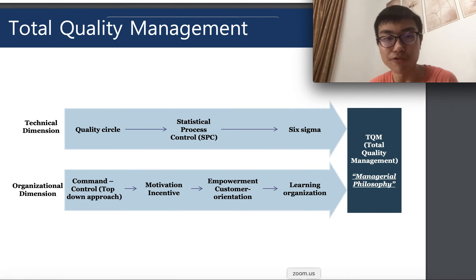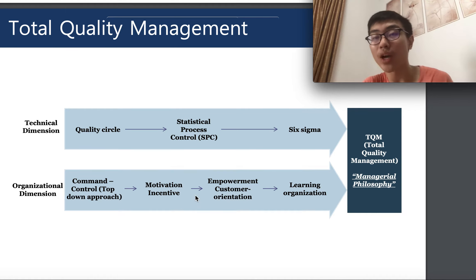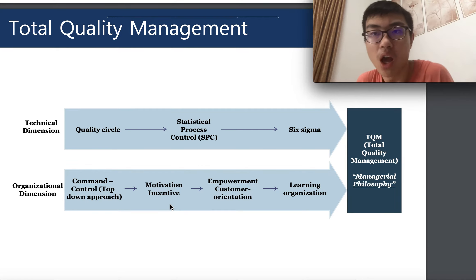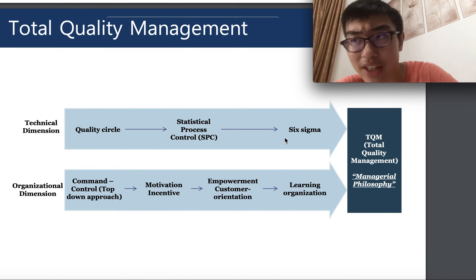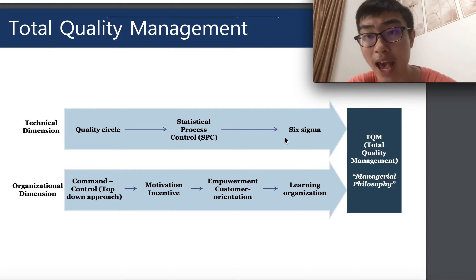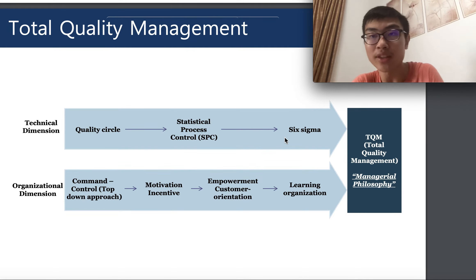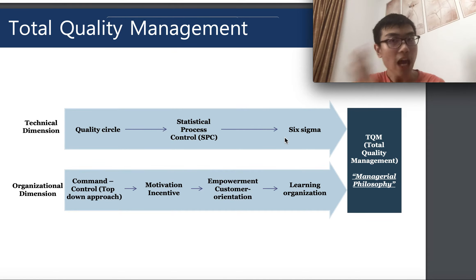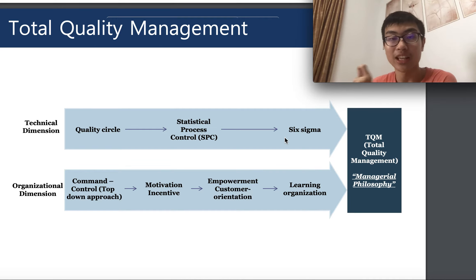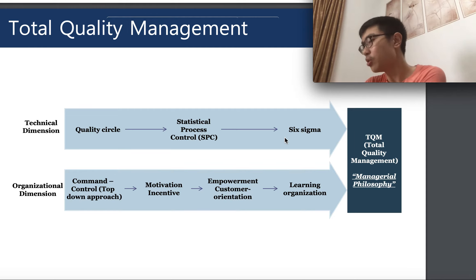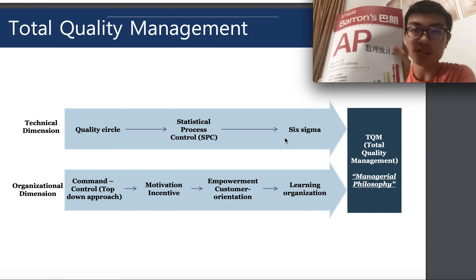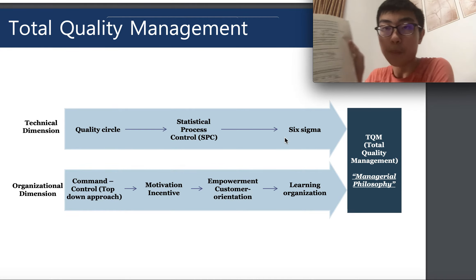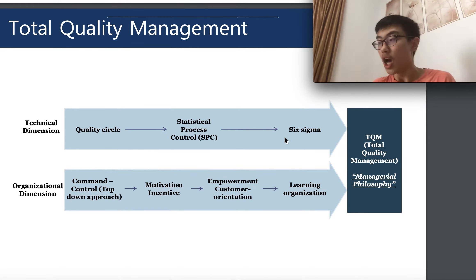As participants in this course, I hope you focus more on the organizational dimension, as it is more directly linked to our managerial and strategic supply chain management course. The quality circle, SPC, and Six Sigma are more for the IT department or those aiming for technical roles — which is also a valuable career path. For those interested in learning more, I suggest an AP Statistics book, which can help with business, finance, and economics as well.